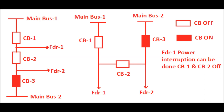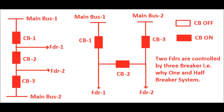When feeder 1 and feeder 2 are in running condition, all three circuit breakers are in closed positions. If feeder 1 power must be interrupted for maintenance — that is, a shutdown of feeder 1 — then CB1 and CB2 should be switched off. Similarly, we can take a shutdown of feeder 2 or interrupt the power through feeder 2 by switching off CB2 and CB3. So switching operations of feeder 1 and feeder 2 are controlled by three circuit breakers via main bus 1 and main bus 2.